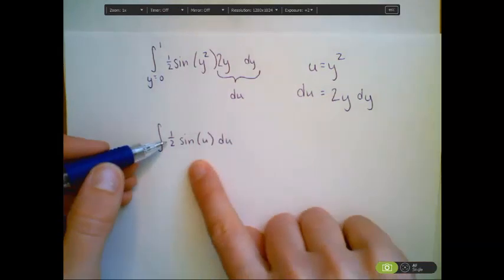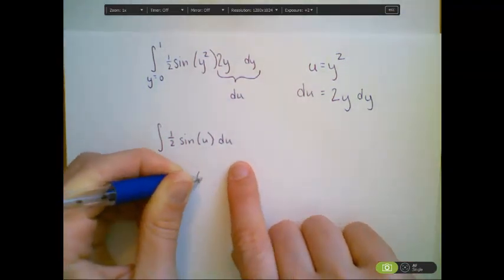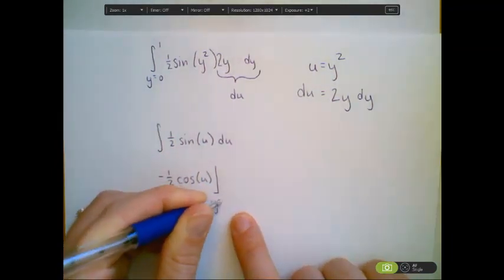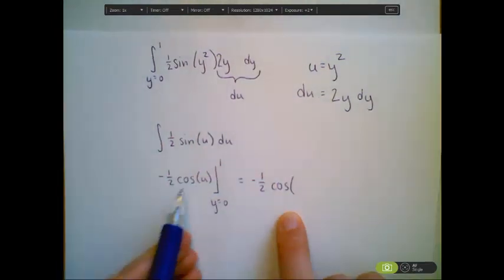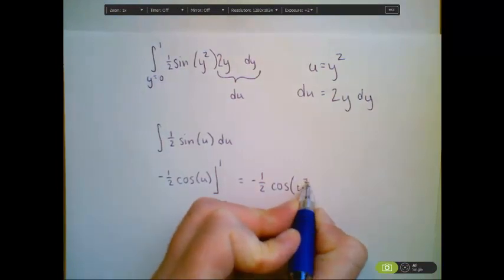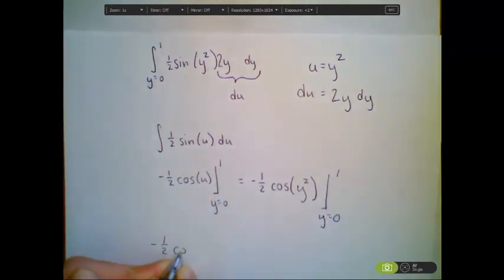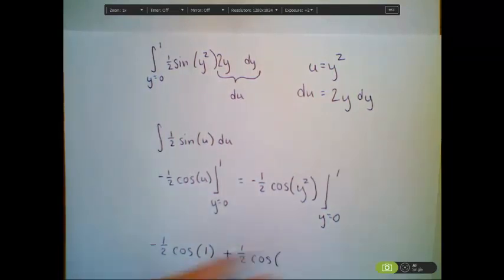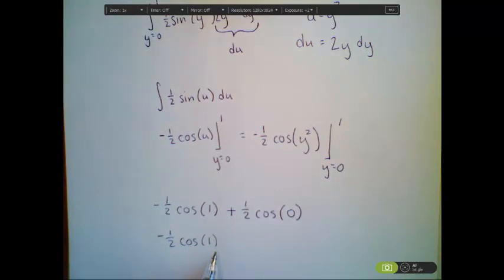When I integrate sine of u, I get negative cosine, so the result is negative one half cosine of u, evaluated from y equals 0 to 1. Substituting back u equals y squared, I get negative one half cosine of y squared, evaluated from 0 to 1. Plugging in: negative one half cosine of 1 minus negative one half cosine of 0. The cosine of 0 is 1, so my final answer is negative one half cosine of 1 plus one half.